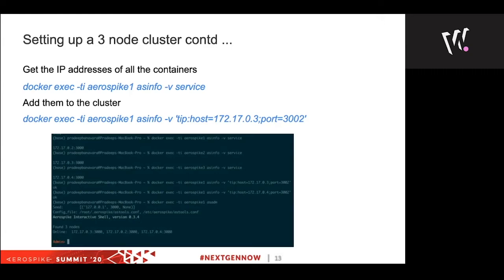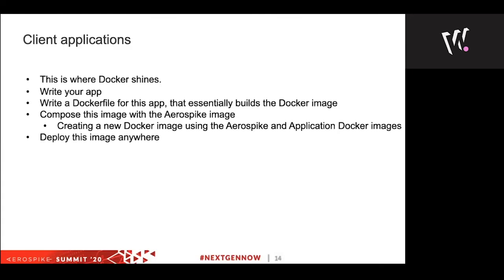Agreed, this is not a real cluster with multiple machines, but it lets you try out and experiment with the clustering abilities of Aerospike without having to spend an inordinate amount of time on networking and multiple machines. With that, let's look at a simple client application and how you can create a Docker image of this application and bundle the Aerospike image with it so that you have one single image you can deploy anywhere for your application to run.